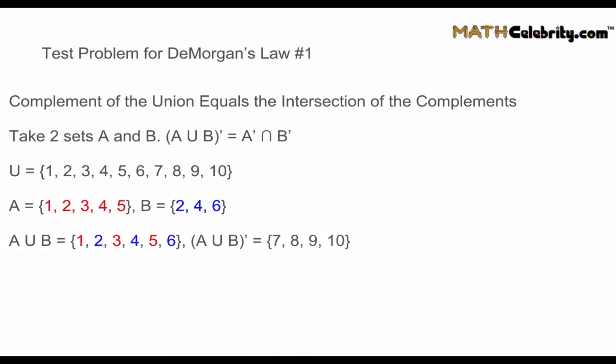A union B means anything in A or B — joining both sets. So A union B = {1, 2, 3, 4, 5, 6}. The complement of A union B is anything not in A union B but in the universal set. Removing 1 through 6, we're left with {7, 8, 9, 10} as the complement of the union.